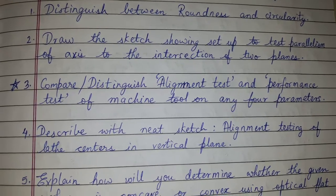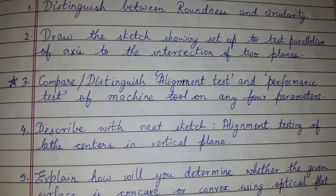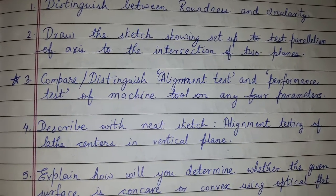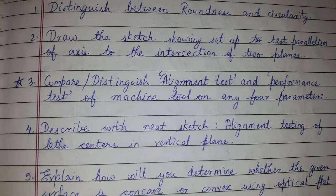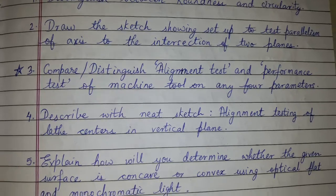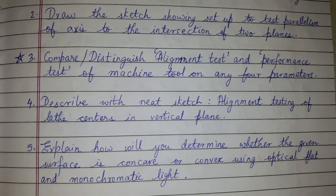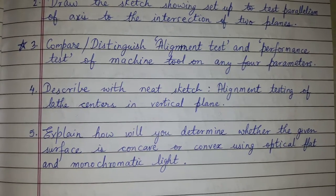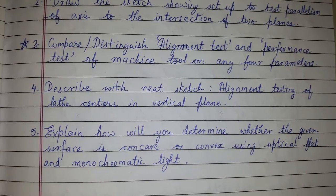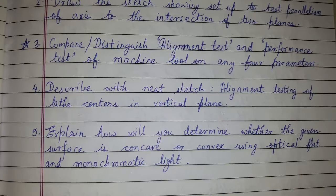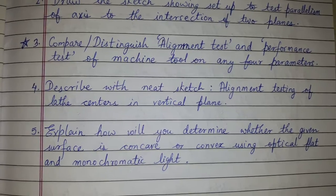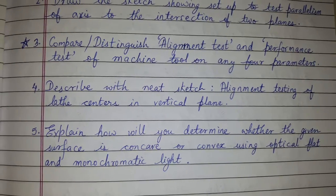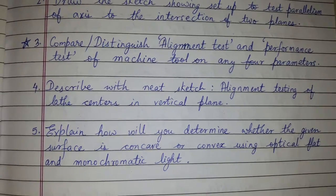The fourth question is: describe with neat sketch alignment testing of lathe centers in a vertical plane. The fifth question is: explain how you will determine whether the given surface is concave or convex using an optical flat and monochromatic light.